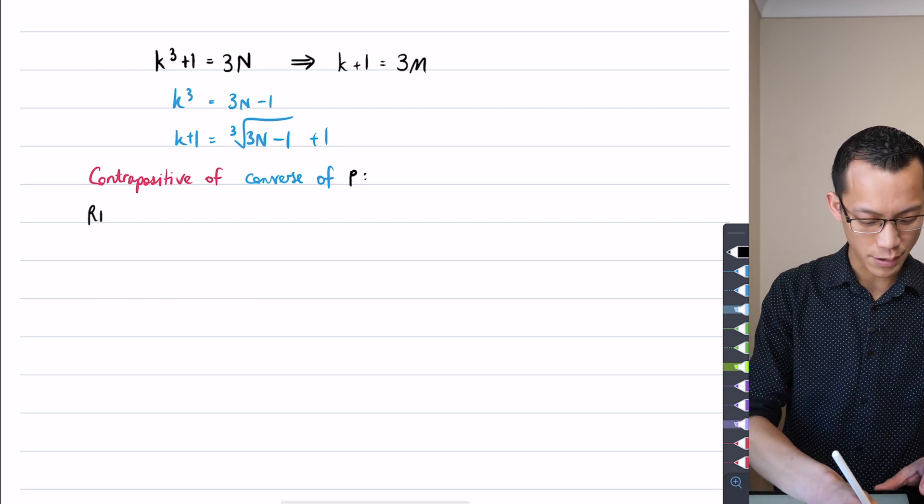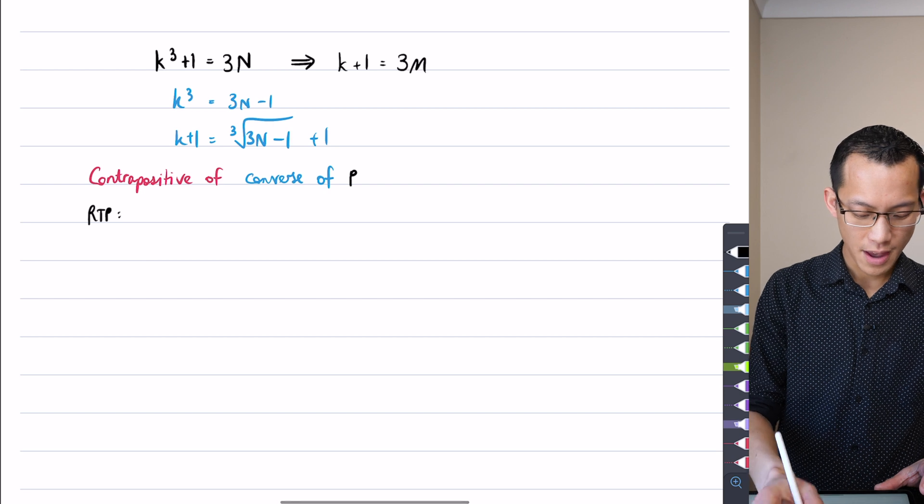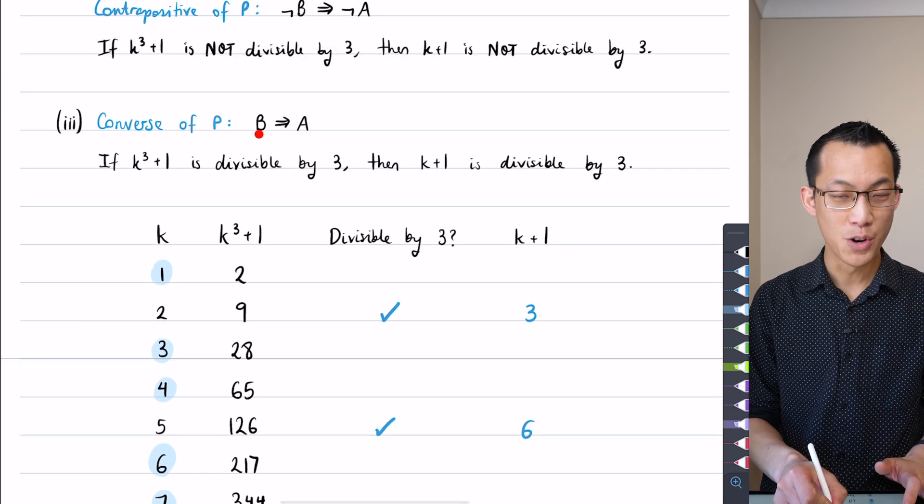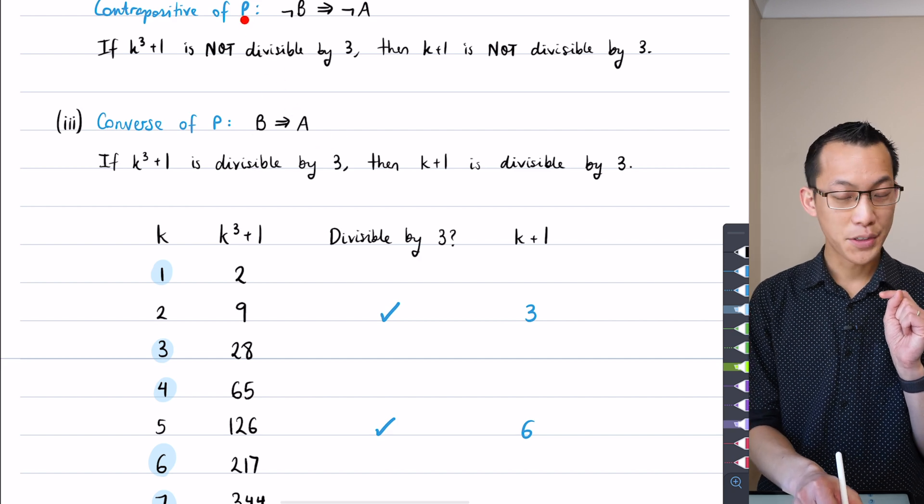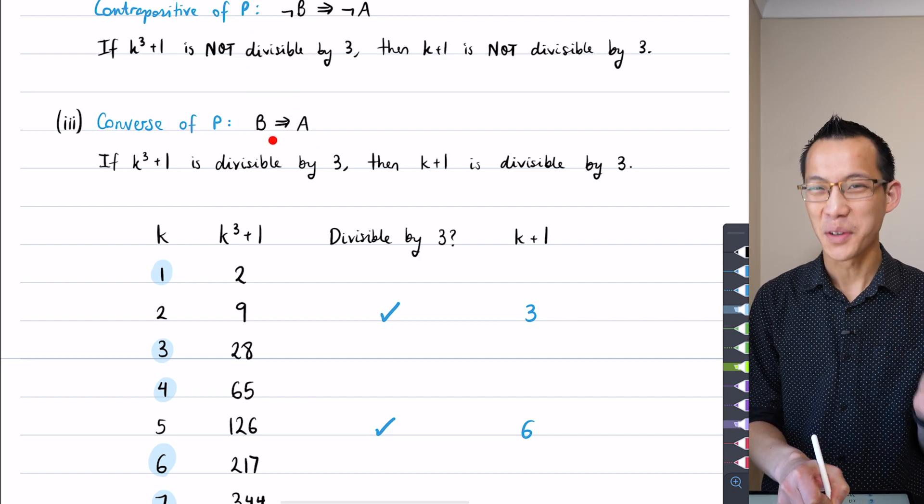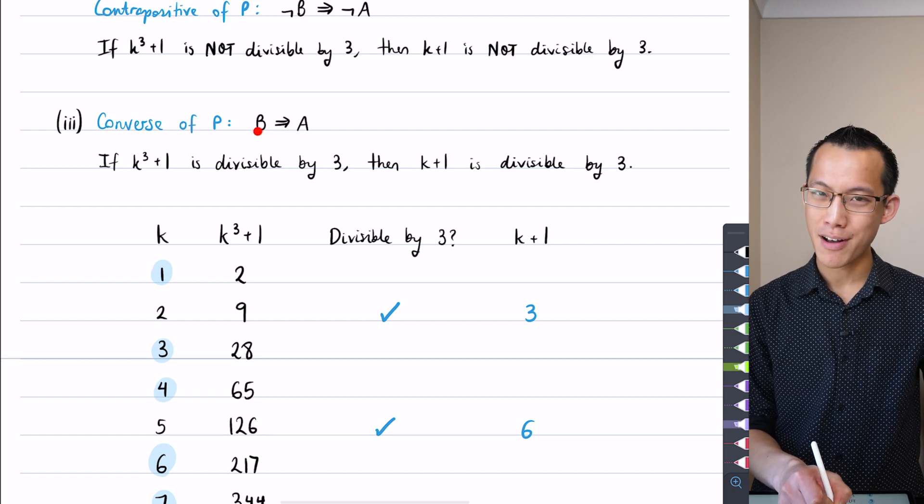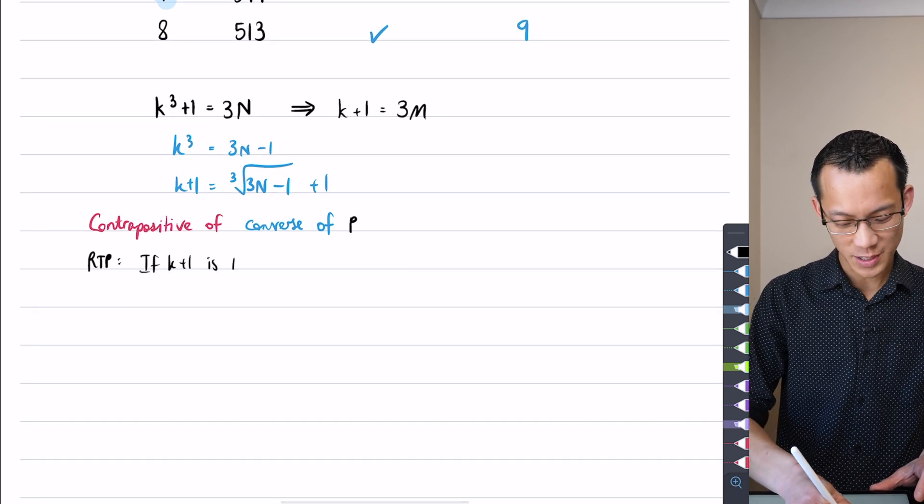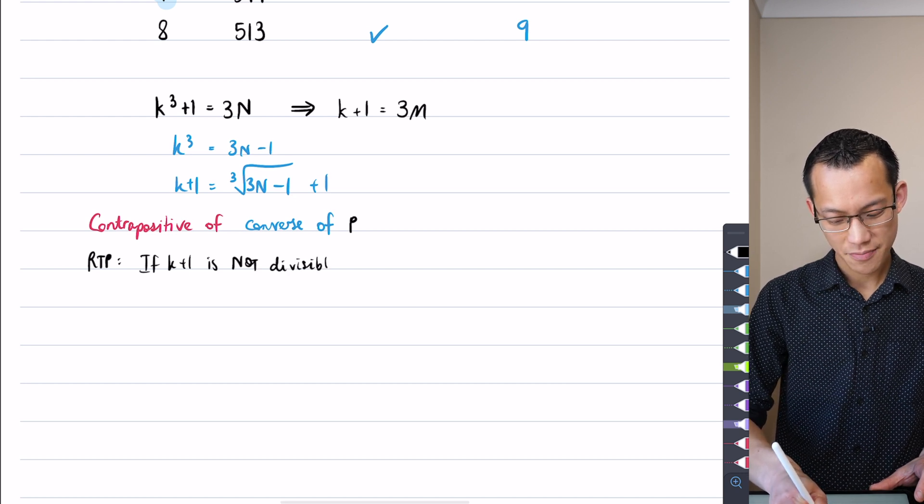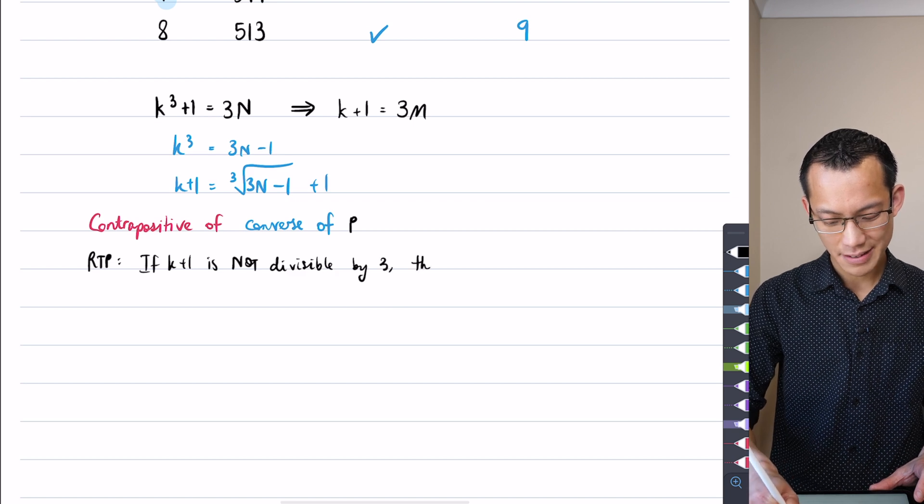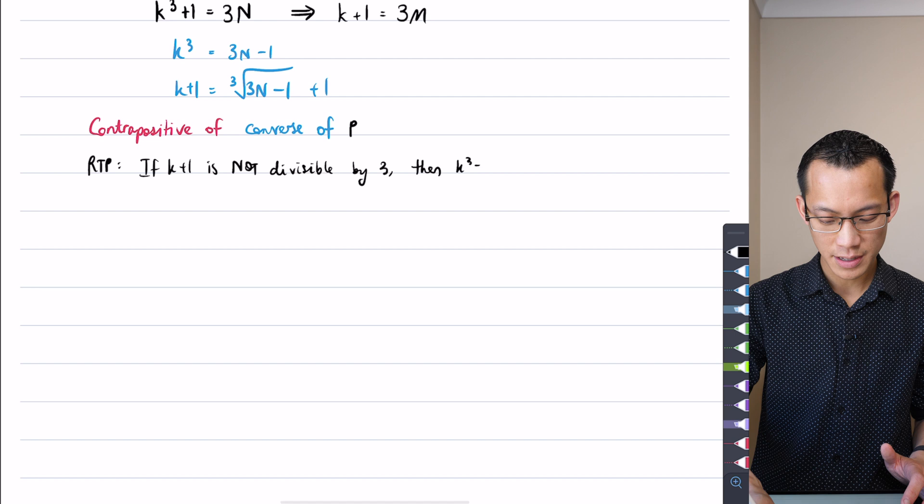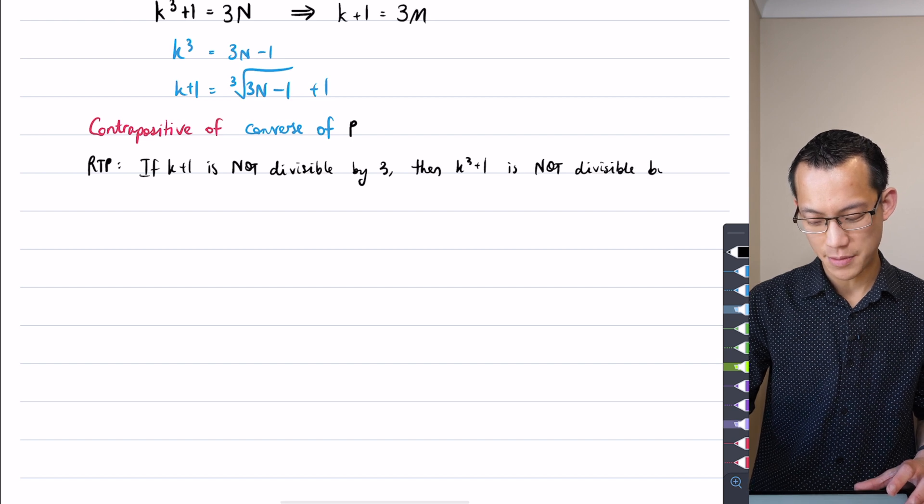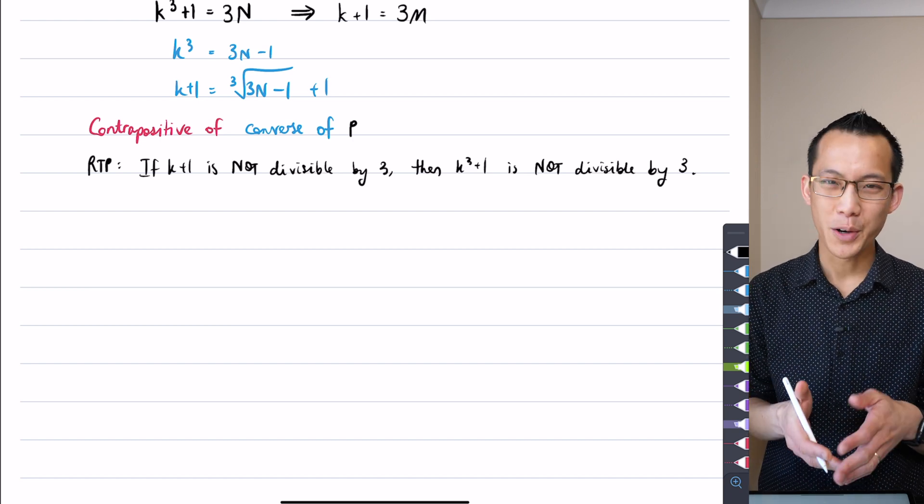So what am I required to prove? I don't need these brackets here, right? I'm required to prove, I'm going to go not, here we go, not A implies not B because this is the converse and I want the contrapositive of this, not the contrapositive of P, the contrapositive of P's converse, okay? So I'm going to go not A implies not B. So it's going to look like this. If K+1 is not divisible by three, there's not A, then here comes not B. K^3+1 is not divisible by three. And whenever I negate something, I like to make it very obvious, which is why you can see I'm using all caps for the word not, okay?